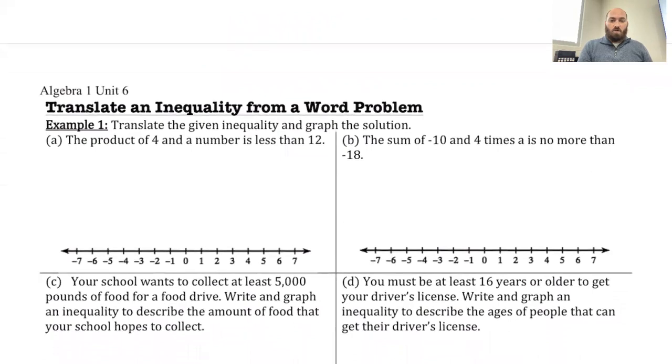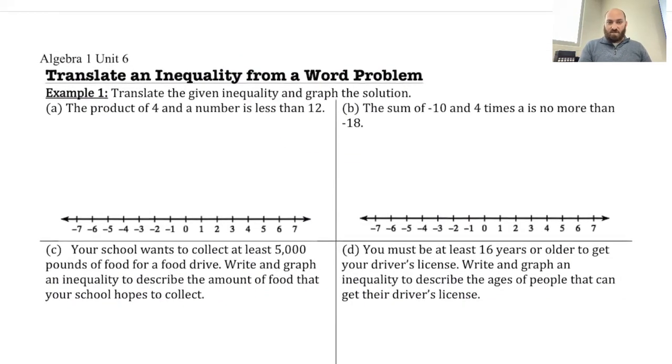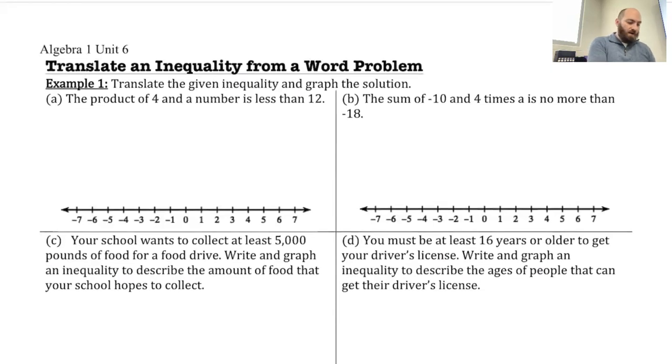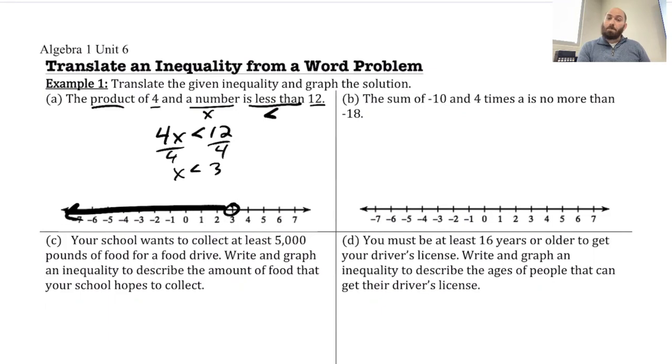So let's work on our translating here. We want to translate the inequality and graph the solution. So the product of 4 and a number is less than 12. So first of all, is less than, that's what my symbol is. Everything else is just going to be representing what's being said here. So product, we know it's multiplication. 4 and a number, I don't know the number, so we'll call it x. So we show product as multiplication, so that's 4 times x, less than 12. Now it just turns into what we've done already in this unit. So we're going to solve this by dividing. So that x is less than 3. That's going to be an open circle on 3, and then I graph it to the left.